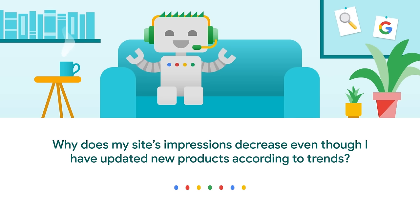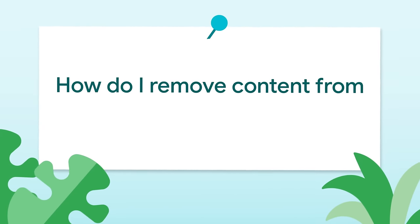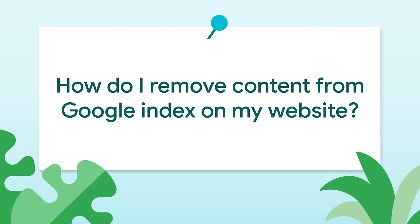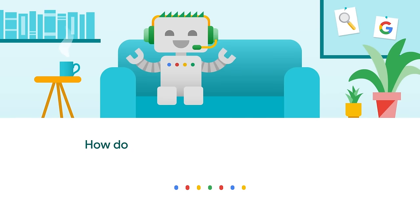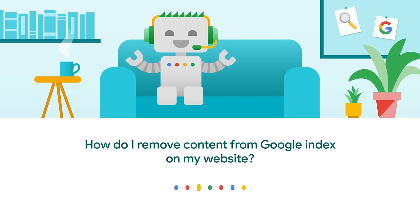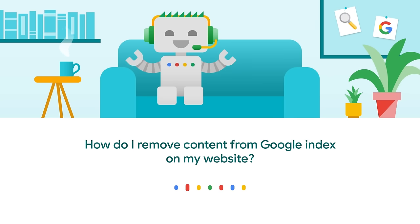Pam is asking: how do I remove content from the Google index on my website? The easiest way is to just delete it on your site and wait until Google recrawls and reprocesses its URLs. You can also add the noindex robots directive or just use the removals tool in Search Console. You should check out our docs because we have plenty of documentation about this.